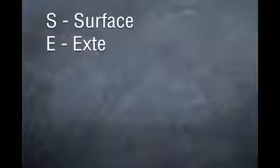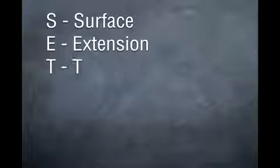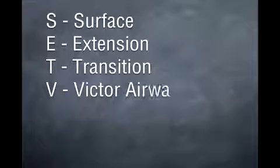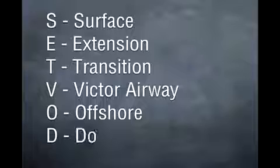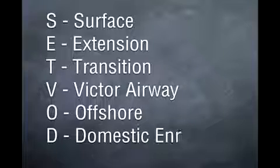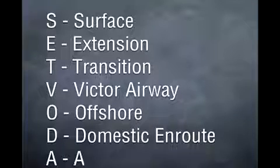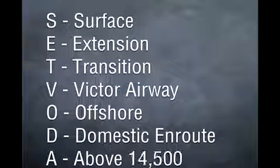The S is for surface. E is for extension. T is a transition area. V is our Victor Airways. O is our Offshore. D is our Domestic Enroute. And A is above 14,500 feet MSL.